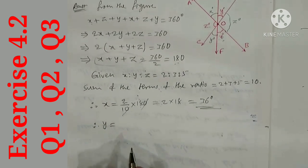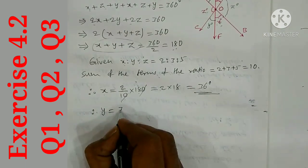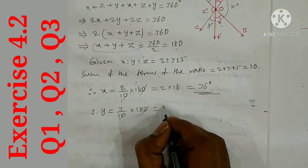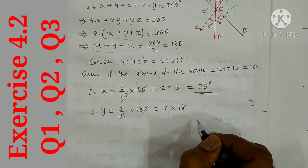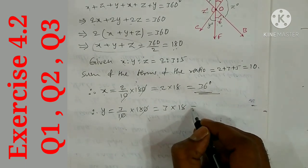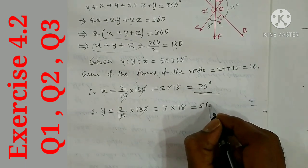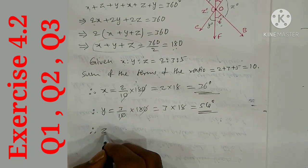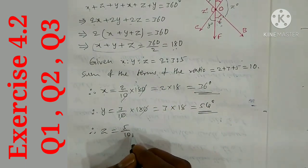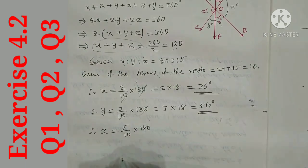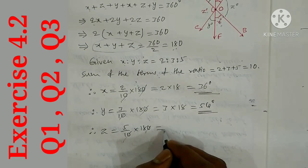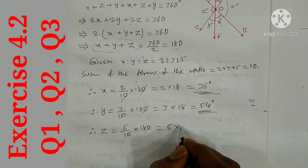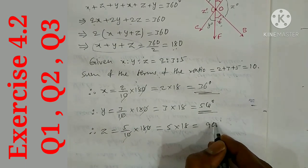y = (3/10) × 180 = 3 × 18 = 54 degrees. z = (5/10) × 180 = 5 × 18 = 90 degrees.